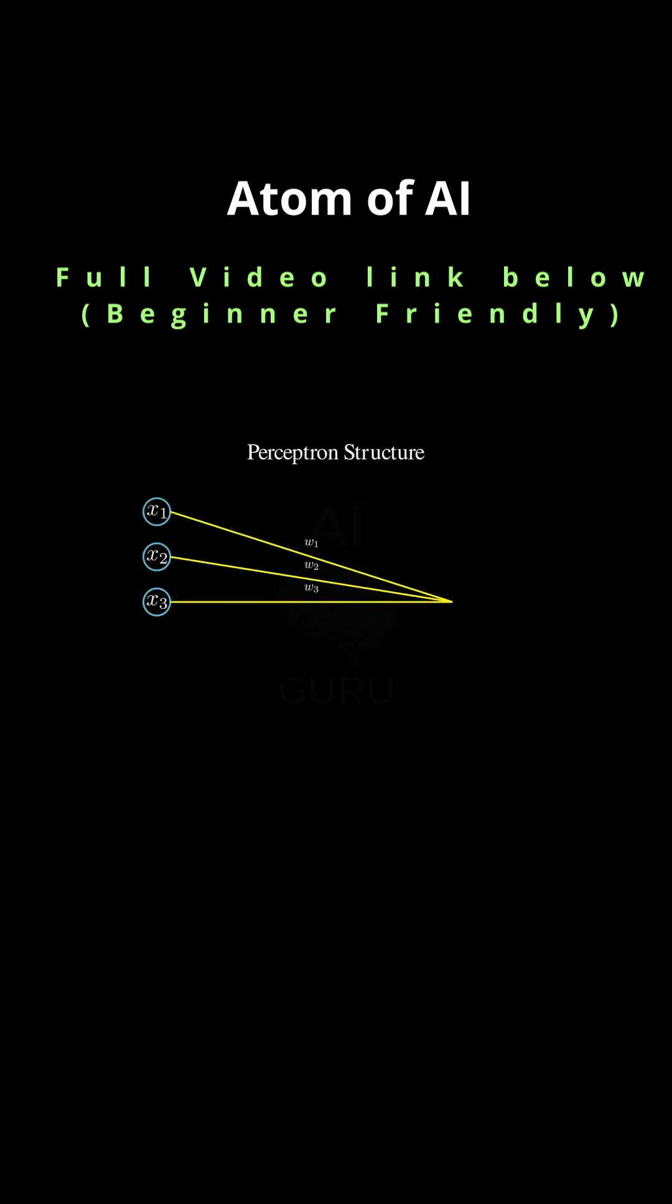Conceptually, it was trying to mimic a basic biological neuron. It takes a bunch of real valued inputs, X1 through Xn, and it assigns a weight, Wi, to each one. And that weight just represents the strength of that connection.